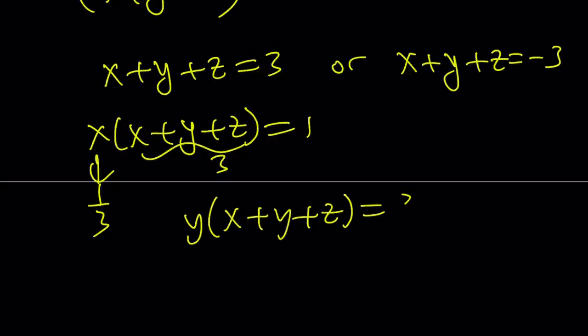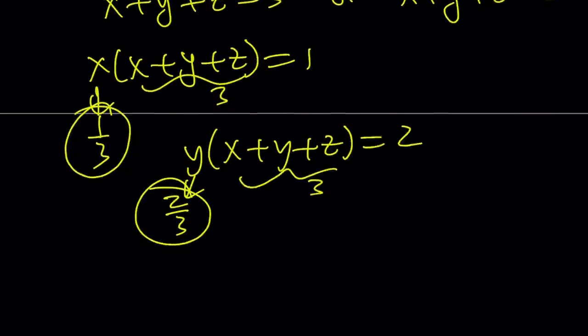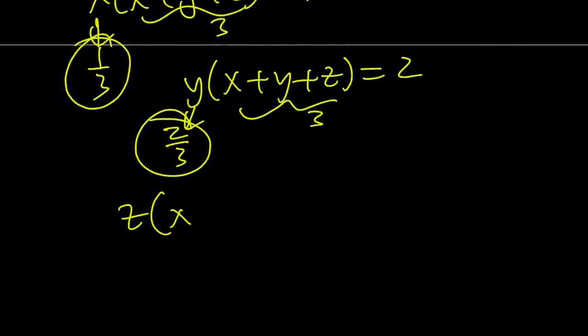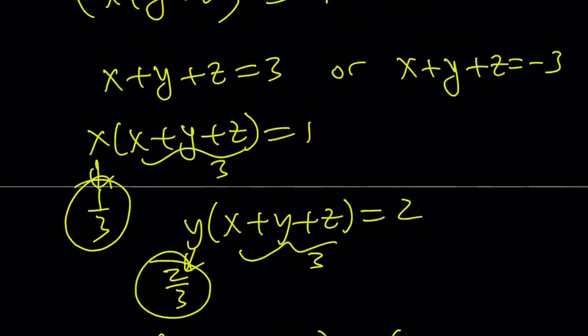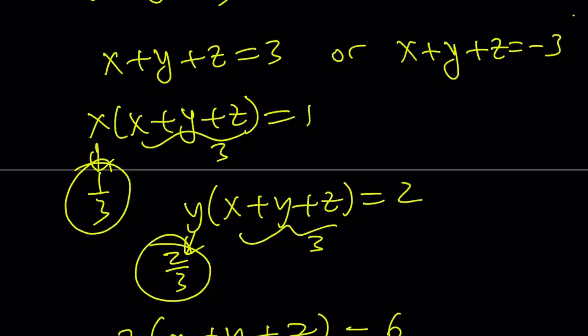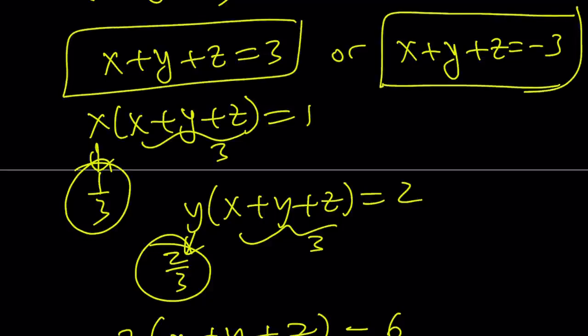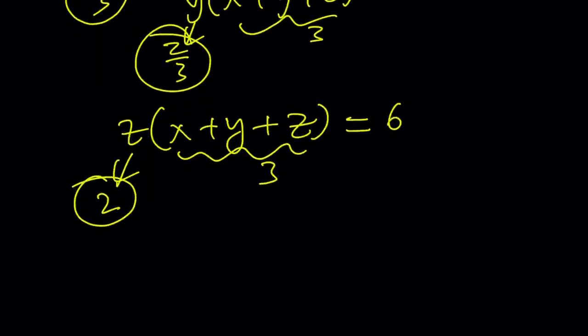This is equal to 2. So this is 3. Therefore, this needs to be 2 thirds. x is 1 third. y is 2 thirds. And finally, with z, we get z times x plus y plus z is equal to 6. And x plus y plus z is equal to 3. Therefore, from here, z becomes 2. But that's just one of the sets. If you go with x plus y plus z equals negative 3, then you're just going to get the opposites of x, y, z.